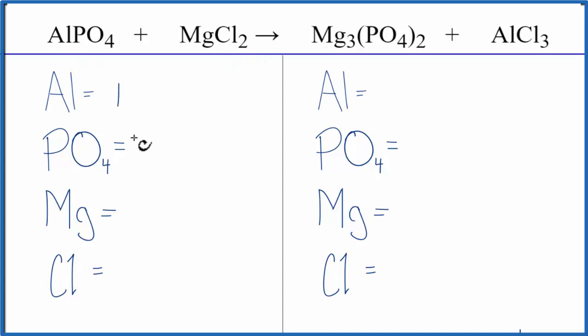We have one aluminum and then we use a bit of a trick here to make this easier. We have this PO4, it's called the phosphate ion. It's a polyatomic ion. We have one phosphate here and it stays together in the chemical reaction. We have a phosphate over here. So we're just going to say we have one PO4. That makes the balancing a lot easier.